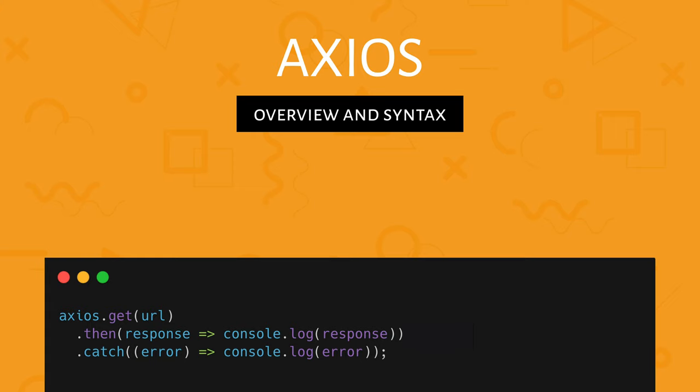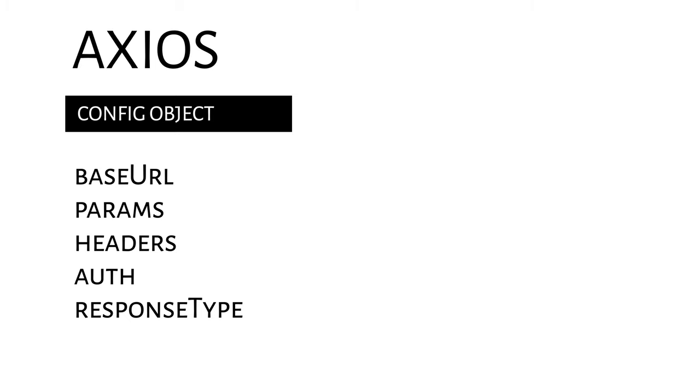Let's take a look at a simple GET request using Axios. On the screen you can see the GET method with a simple callback for response and for error. If we would like to use any other method, it's enough to replace GET with, for example, POST or DELETE. When creating a config object, we can define a bunch of properties. The most common are baseURL, params, headers, auth, and responseType.